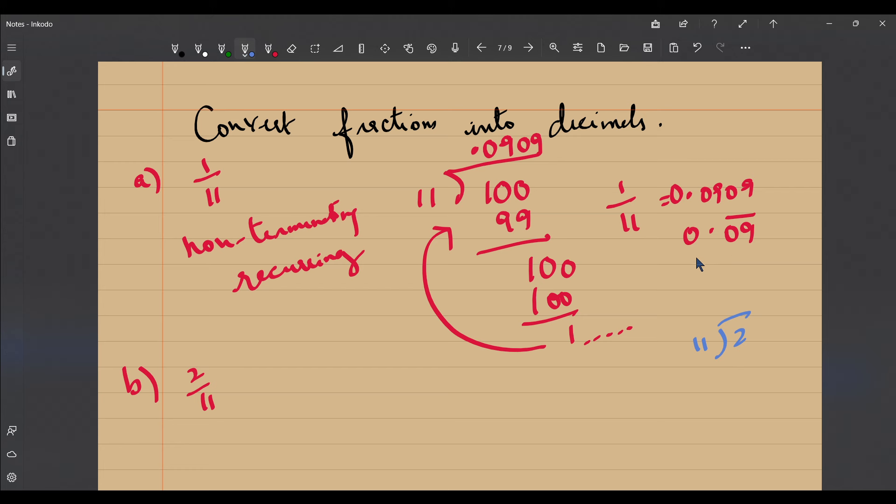Because 2 by 11 is equal to 2 into 1 by 11, so you can just say it is 2 into 0.0909, or you would get 0.181818 or this can be represented as 0.18 bar to show that this is also a non-terminating recurring decimal.